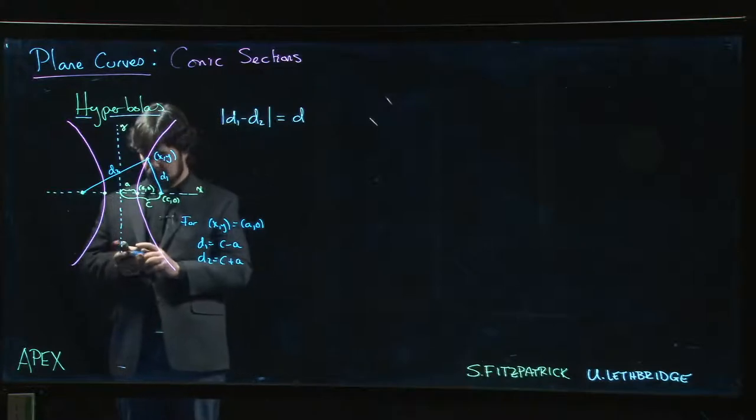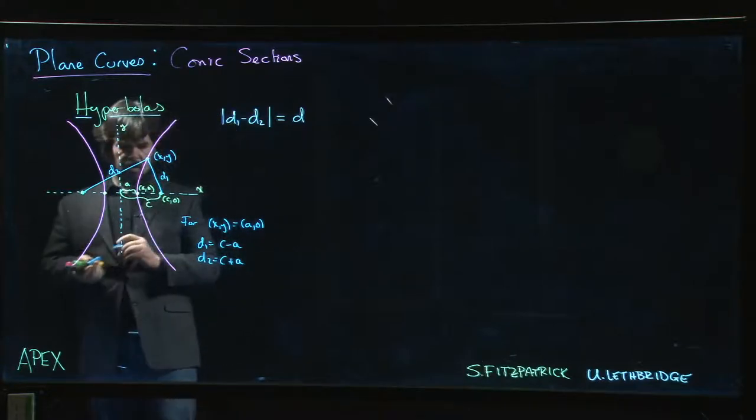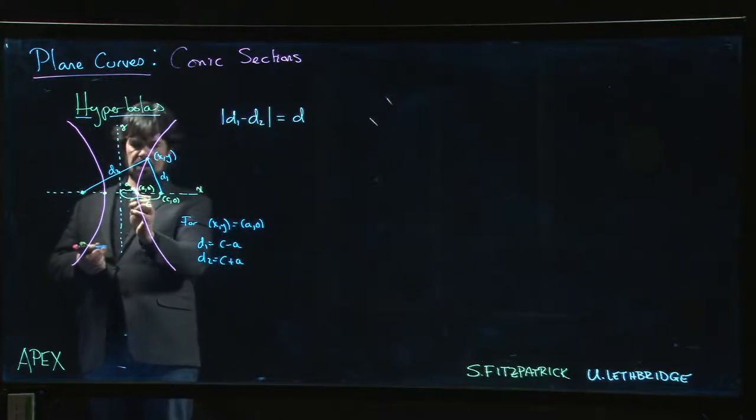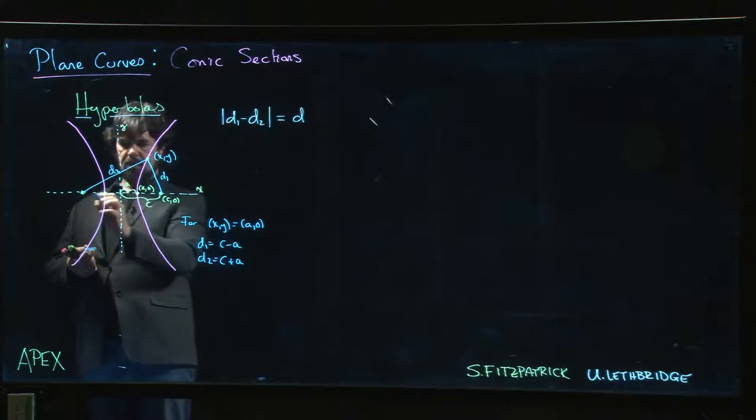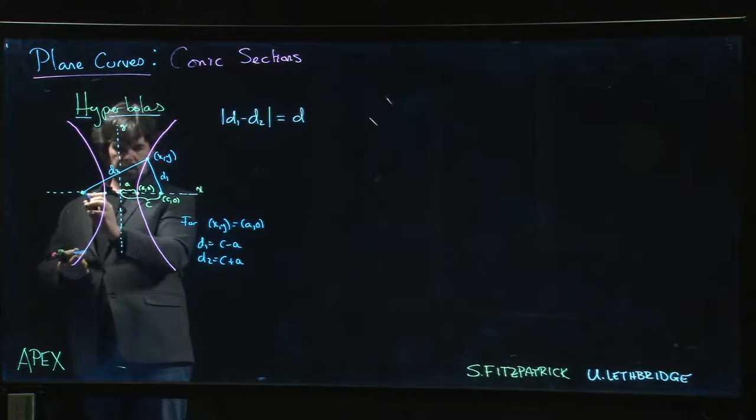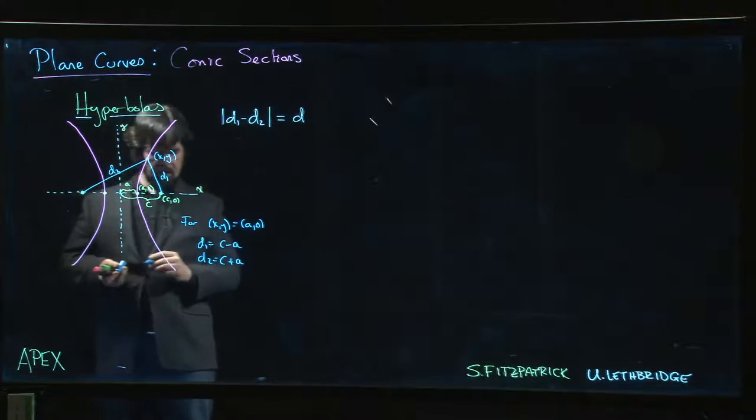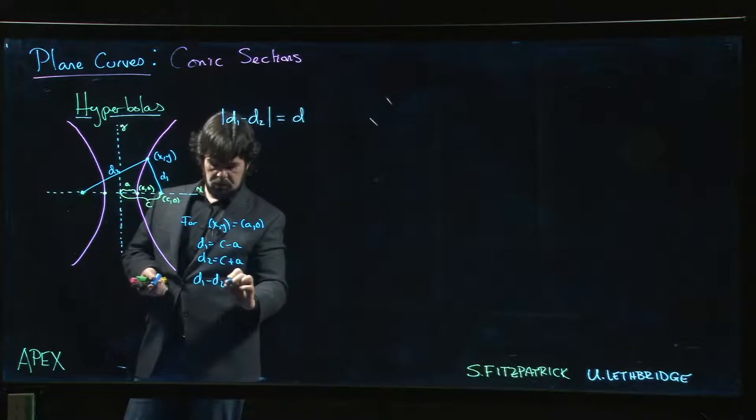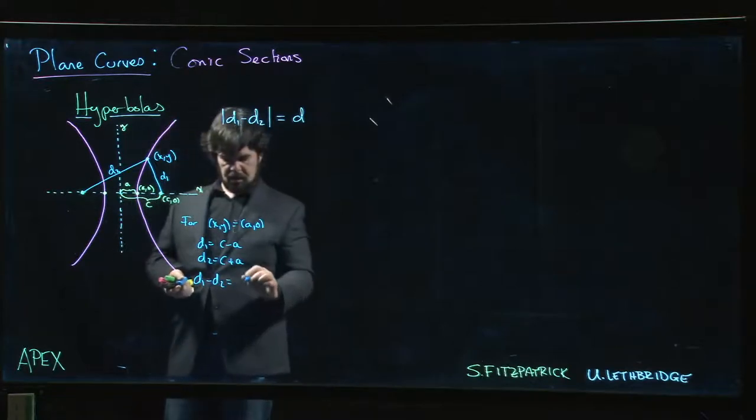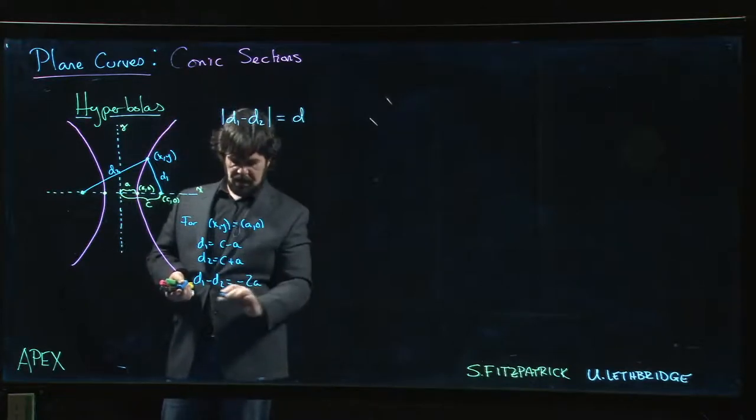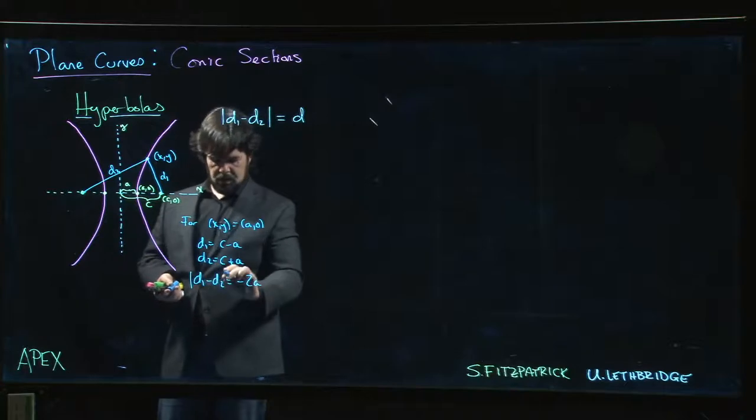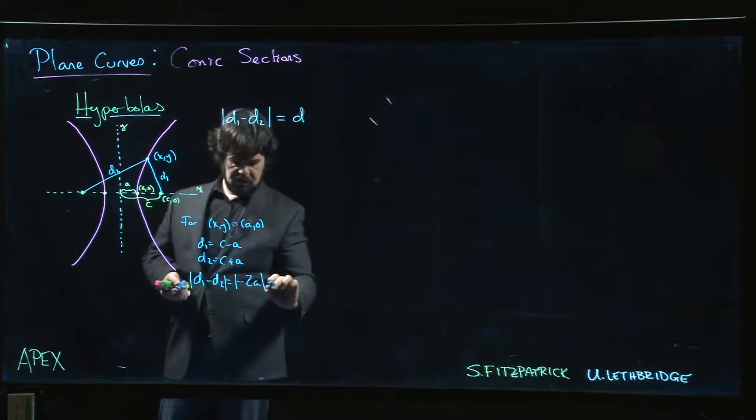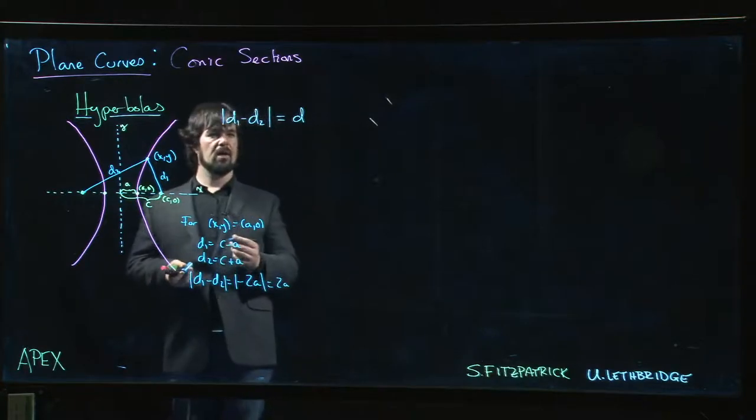The distance from here to there is a, the distance from here to there is c, so it's a plus c. And so if I'm doing d1 minus d2, what am I going to get? I'm going to get minus 2a.